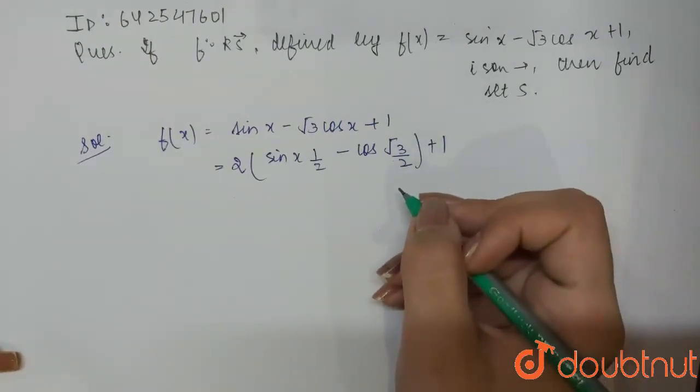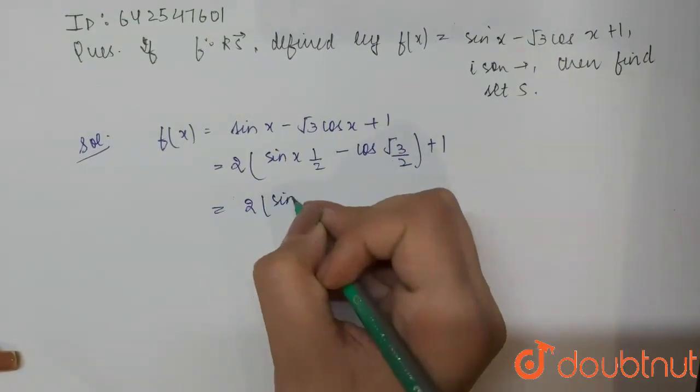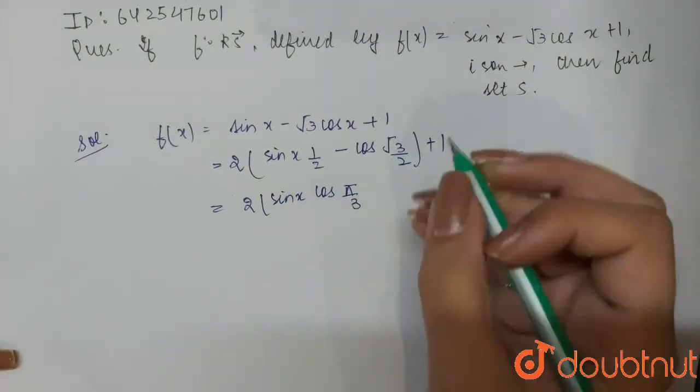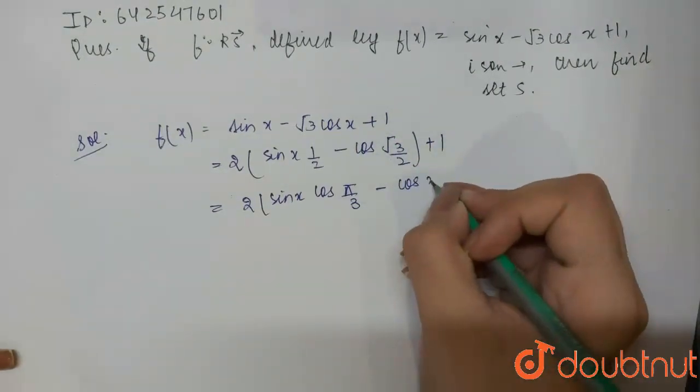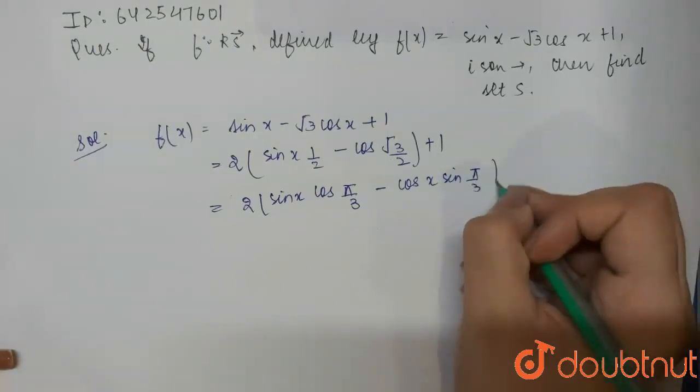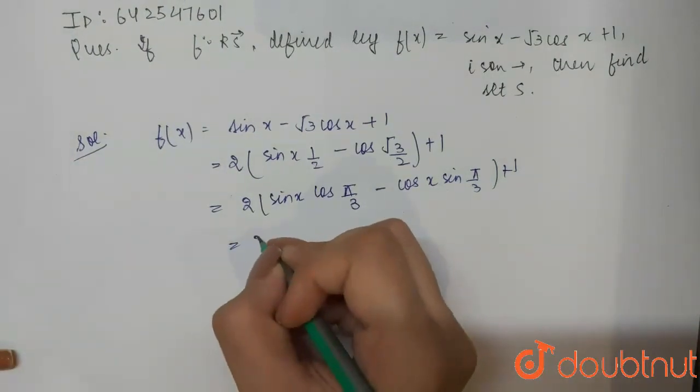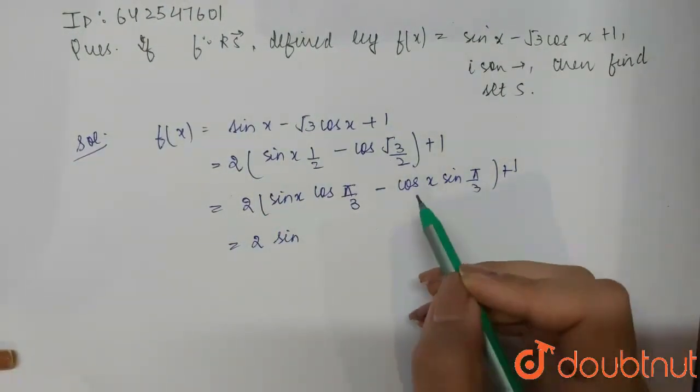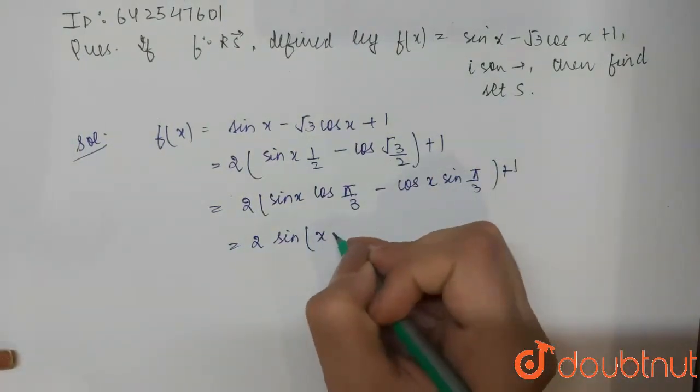Now this can be written as 2 times sin x cos π by 3 minus cos x sin π by 3 plus 1. Or you can say 2 sin, this is sin a cos b minus cos a sin b which is sin of a minus b.